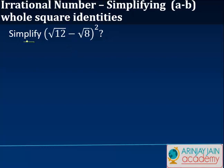If you have to simplify (√12 - √8)², this is like (a - b)² where a = √12 and b = √8.